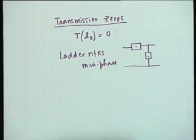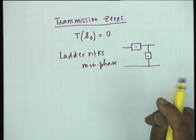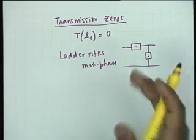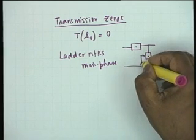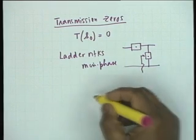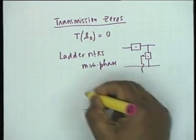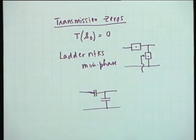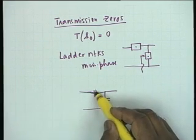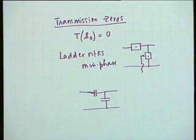A series impedance pole is not necessarily a transmission zero. If the input impedance looking from that impedance also has a pole at the same frequency, then that is not a transmission zero. For example, a network with a capacitor at the input does not have a transmission zero at s = 0, because at s = 0 both elements give rise to a pole, and the voltage is distributed between the two.